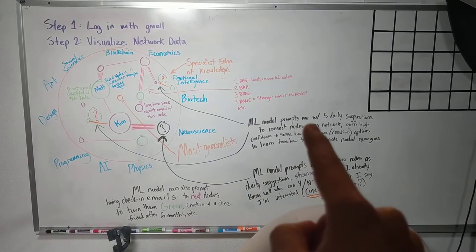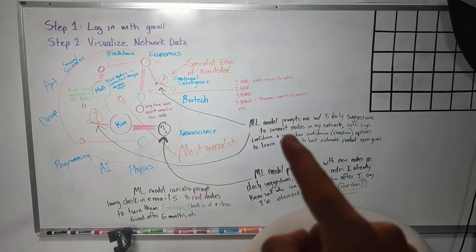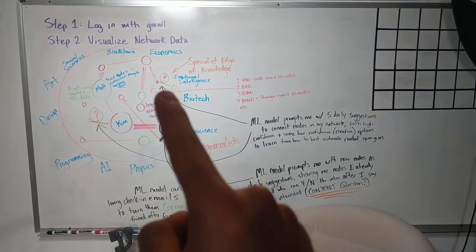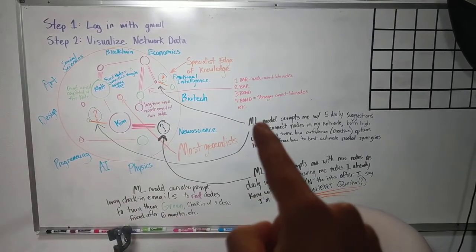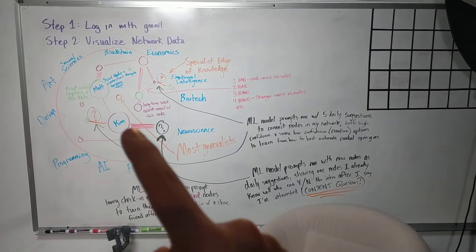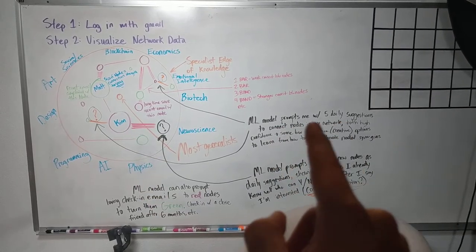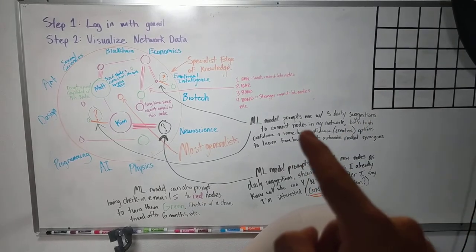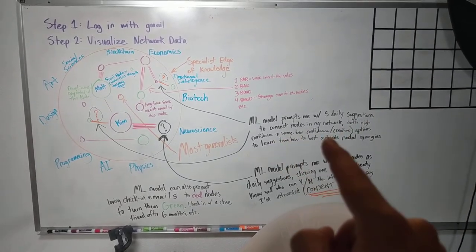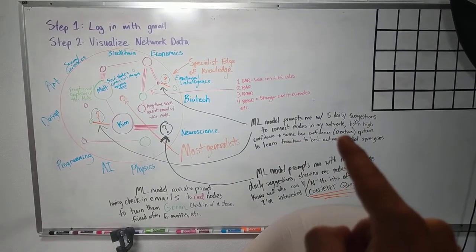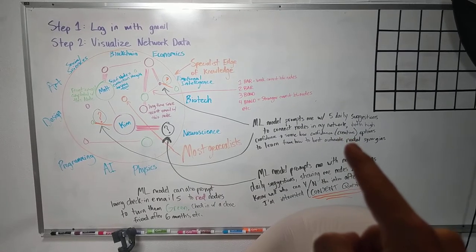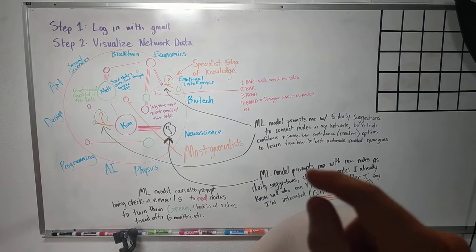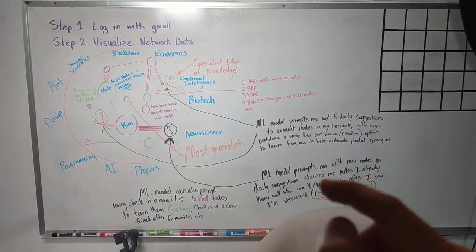And that's this option: ML model prompts me with five daily suggestions to connect nodes in my network. So this would be what Kim would get. Kim would get one of these question mark nodes, and these question mark nodes would be the ones that, for example, Kim would be getting this daily suggestion to connect me to this node. And so she'd get these five daily suggestions, both with high confidence and some low confidence, because on the low confidence there's going to be creativity, creative options. So we can see maybe this 20 or 30 percent confidence connection is actually one that Alan wants.